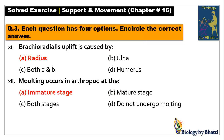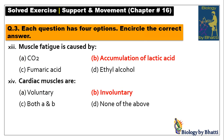Number 11: brachioradialis uplift is caused by the radius — answer is option A. Number 12: molting occurs in arthropods at the immature stage, because the purpose of molting is to increase size and grow. Once the animal is mature, molting is no longer needed — answer is option A. Number 13: muscle fatigue is caused by accumulation of lactic acid, which makes muscles stiff, torn, and painful. Number 14: cardiac muscles are involuntary because they are not under conscious control — answer is option B.